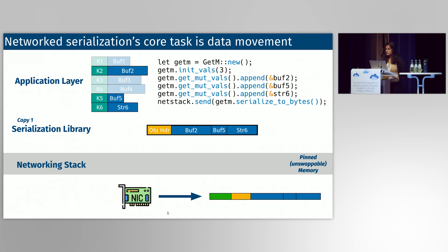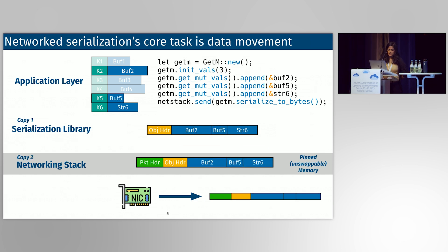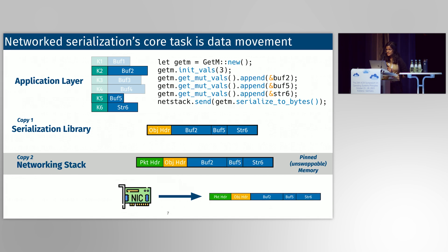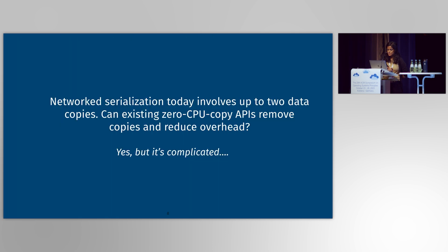Unfortunately, we're not done here. The networking stack maintains additional PIN buffers because NICs can only access certain pages of PIN unswappable memory. So on send, this entire payload will be copied again into a networking stack buffer along with a packet header. Finally, the NIC can access this over PCIe and send it out over the network. We've seen that this path from getting application data to the NIC in contiguous format uses two copies when using network serialization today.